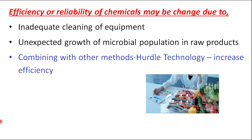The efficiency or reliability of chemicals may be changed due to different factors. Inadequate cleaning of equipment and unexpected growth of microbial populations in raw products can reduce the efficiency of chemical preservatives. Also, combining with other methods — that means hurdle technology — can increase the efficiency of chemical preservatives.